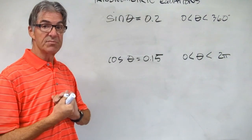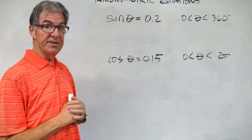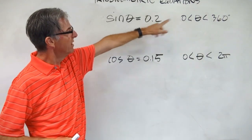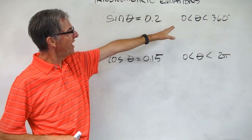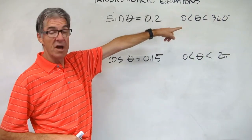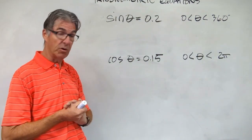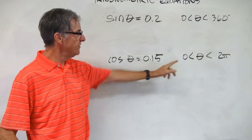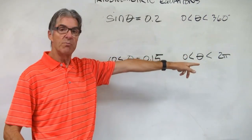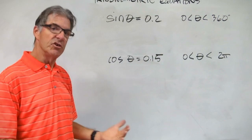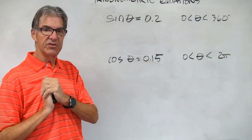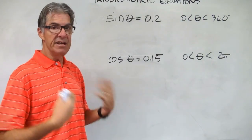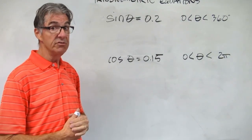I'd like to give you two practice problems. First: sine theta equals 0.2, find the possible values of theta from 0 to 360 degrees — you want to be in degrees for this one. Second: cosine theta equals 0.15, between 0 and 2 pi radians. Remember, you can change your calculator to radians, or just convert using pi and keep your calculator in degrees — whichever you like.